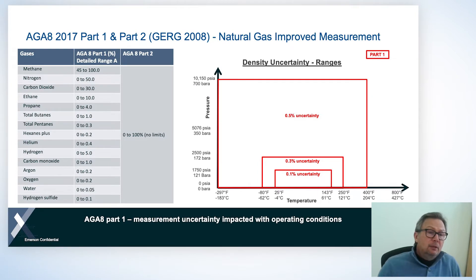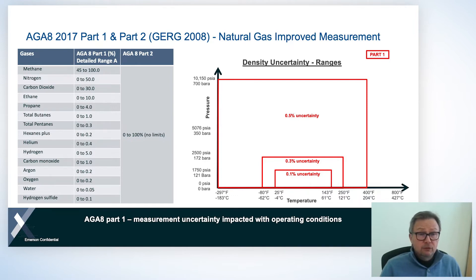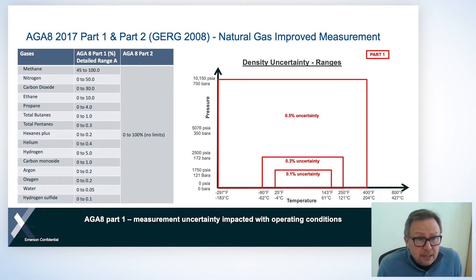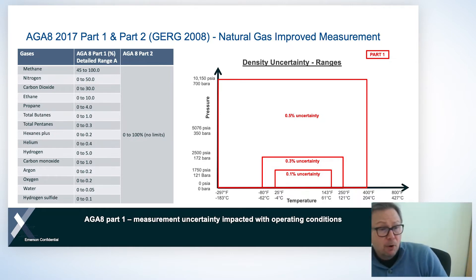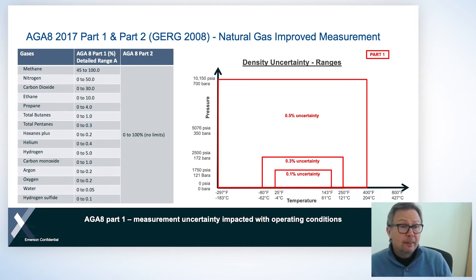Looking in more detail at this chart, we see AJ8 part one and part two composition data on the left, and on the right the part one density uncertainty. You can see the gas composition limits for AJ8 part one — for something like propane, the limits are 0 to 4%. For AJ8 part two, there are no limits; we can cope with 0 to 100% of each component, so it's useful for pure gas applications.